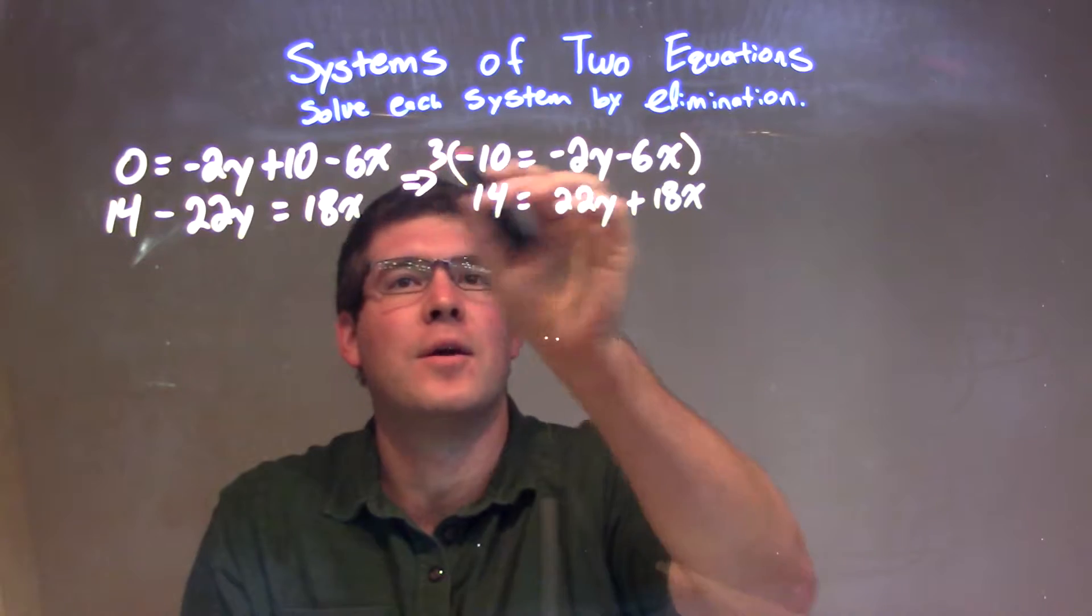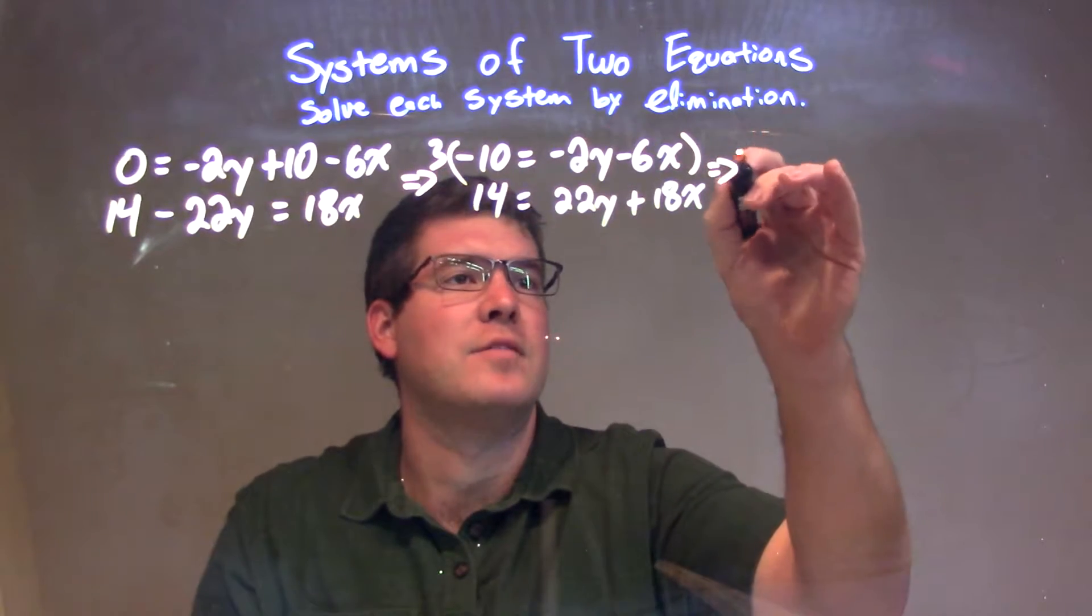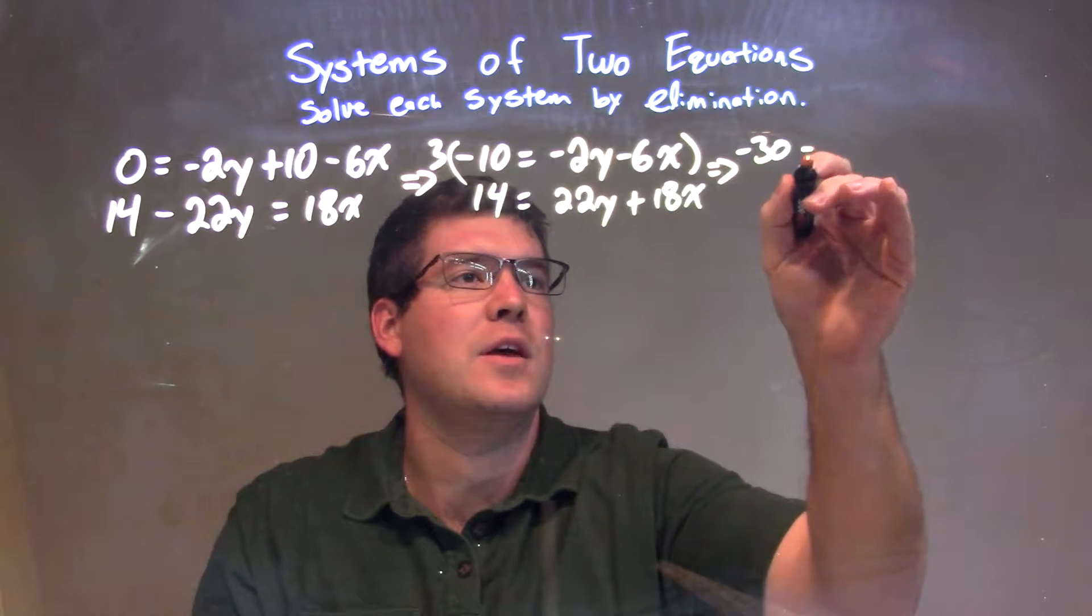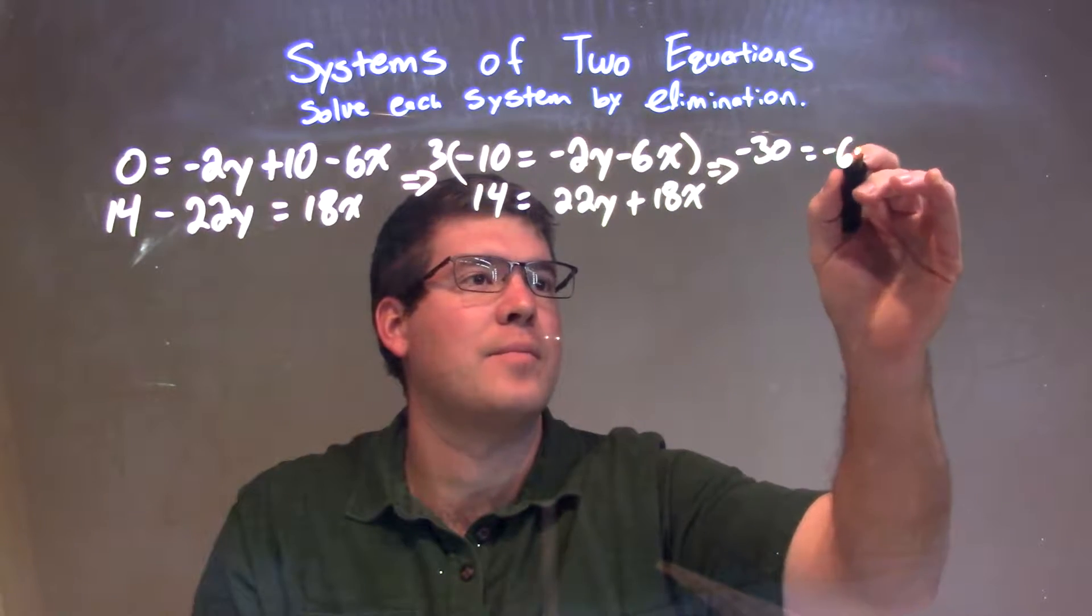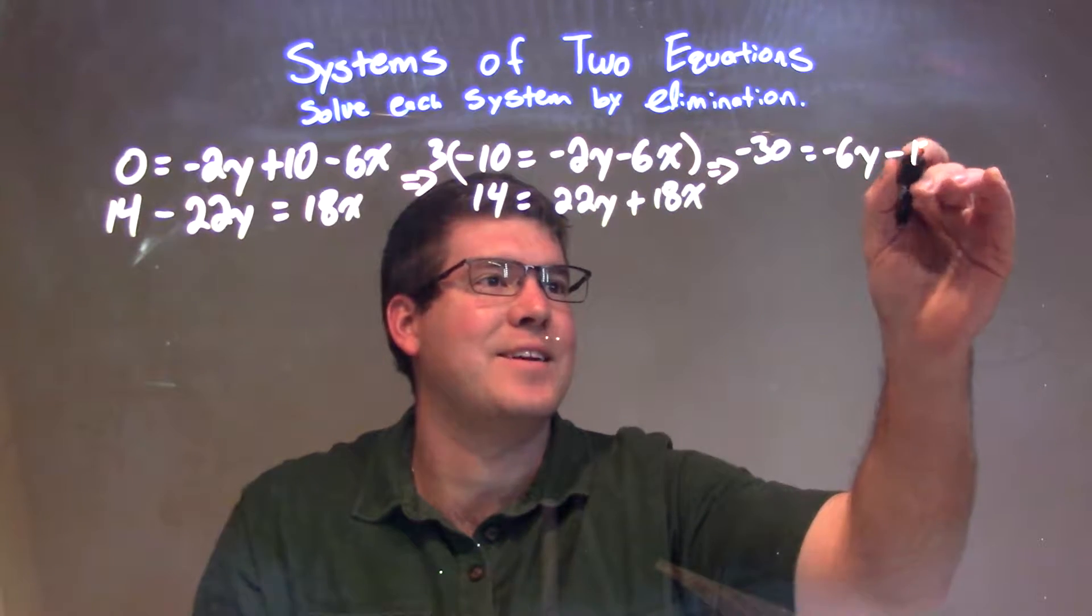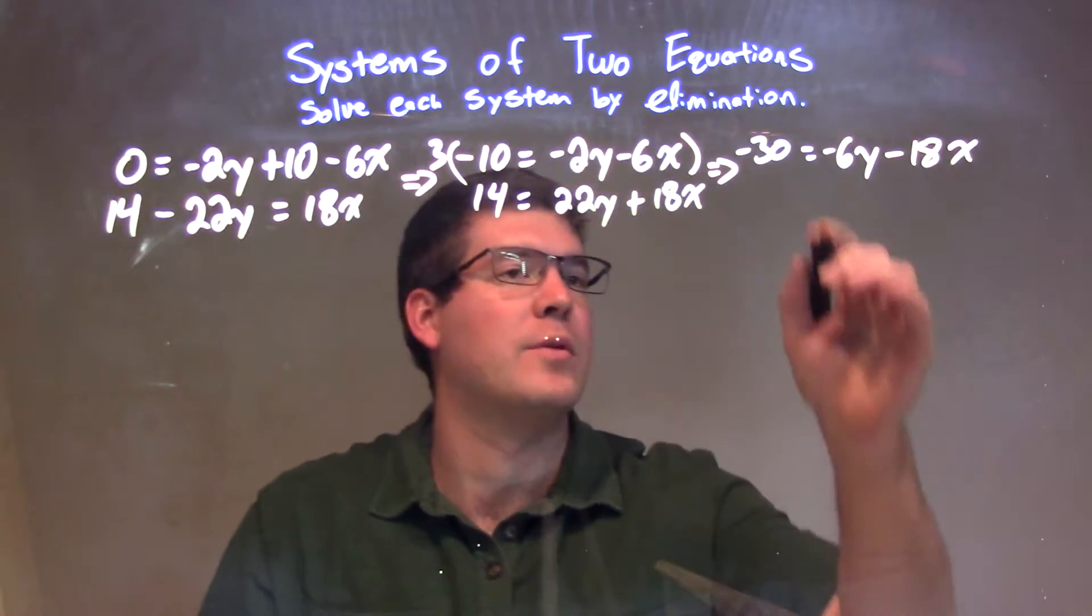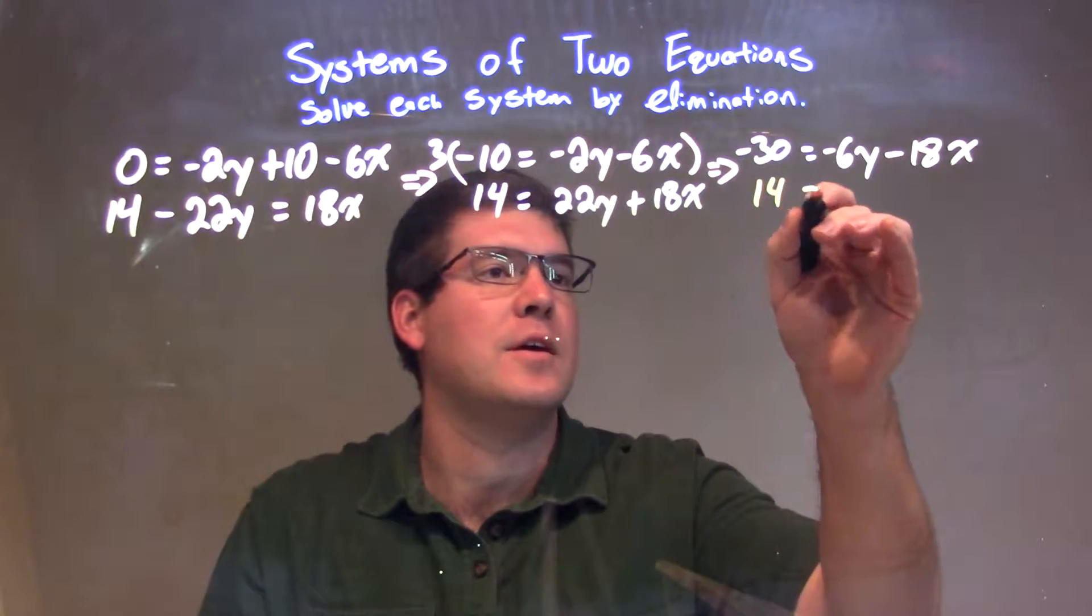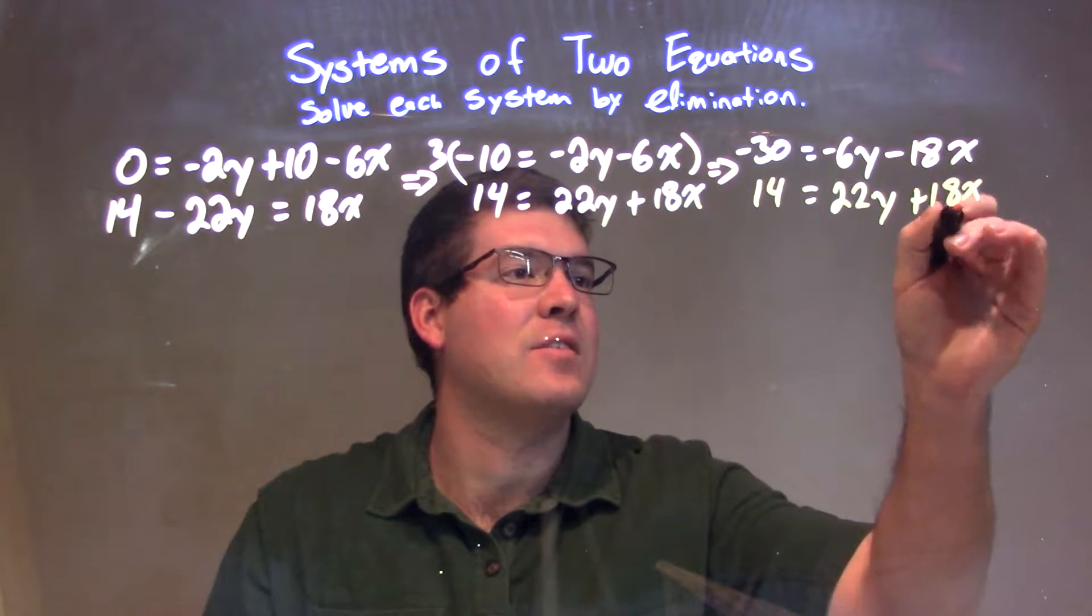I multiply the top one by 3 to all parts. 3 times negative 10 is negative 30 equals 3 times negative 2y is negative 6y and 3 times minus 6x is minus 18x. I want to bring over the 14 equals 22y plus 18x, and that is unchanged.